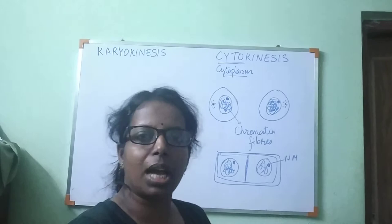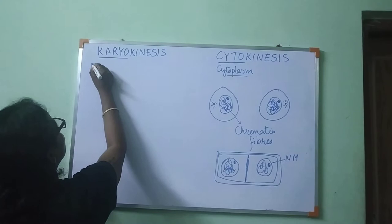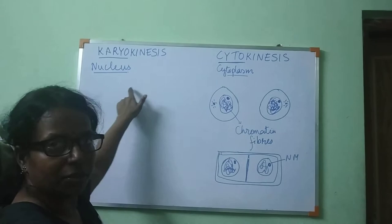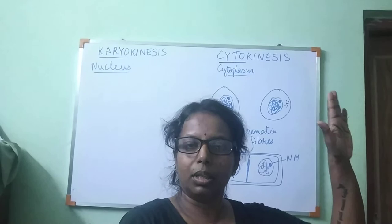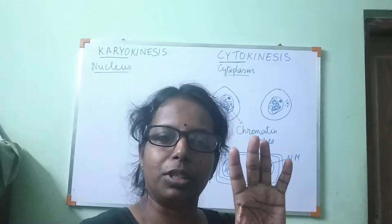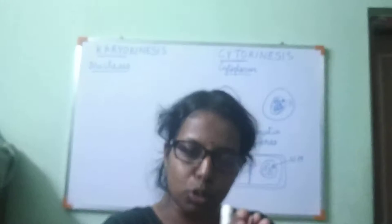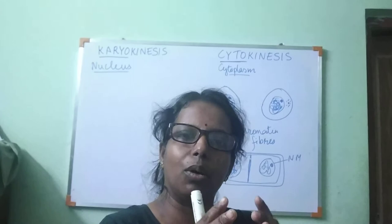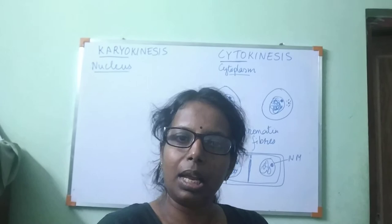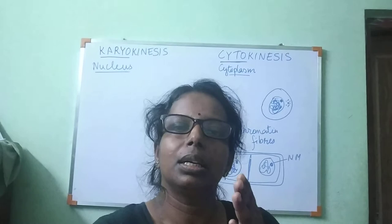Ishika asked about karyokinesis. Karyo refers to nucleus, so karyokinesis means division of the nucleus. When you saw the four phases — prophase, metaphase, anaphase, and telophase — the nucleus has the genetic material. The chromosomes duplicate, DNA duplication takes place, and gradually the two duplicated chromosomes migrate towards the opposite poles. This migration of chromosomes to the opposite poles is known as karyokinesis.